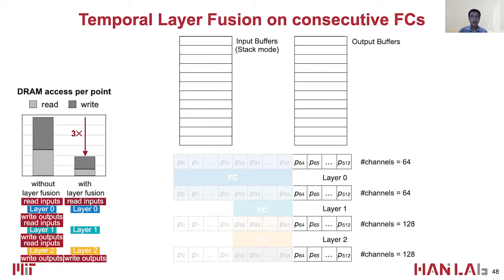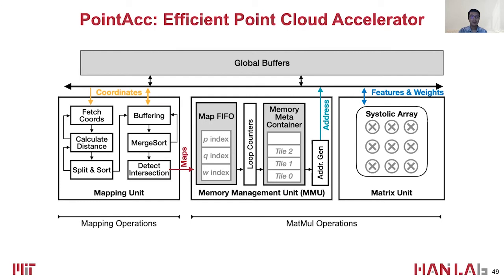As we can see, layer fusion only reads the input features of layer 0 and writes the output features of layer 2, and thus the off-chip memory footprint is 3 times smaller than without layer fusion. With the help of the mapping unit and memory management unit, Point Tech now supports various point cloud networks.